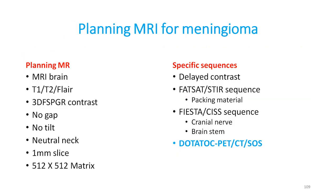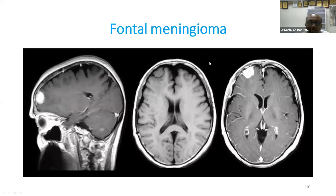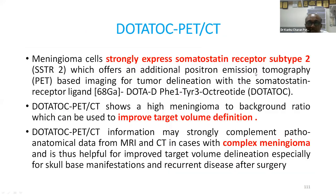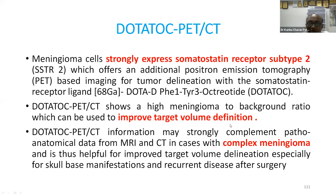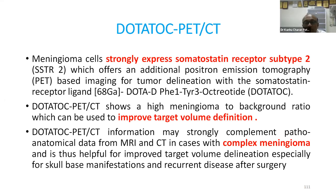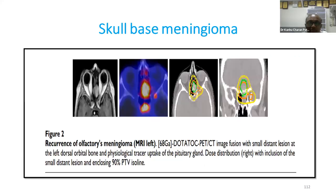For meningiomas, request delayed contrast images, fat-sat sequence for packing material differentiation, and cranial nerve evaluation. Also consider DOTATATE PET-CT — meningiomas strongly express somatostatin receptor subtype 2. DOTATATE improves target delineation, particularly for complex skull-base meningiomas where distinguishing vascular structures from bony structures is difficult. Target volume delineation definitely changes with DOTATATE scan.